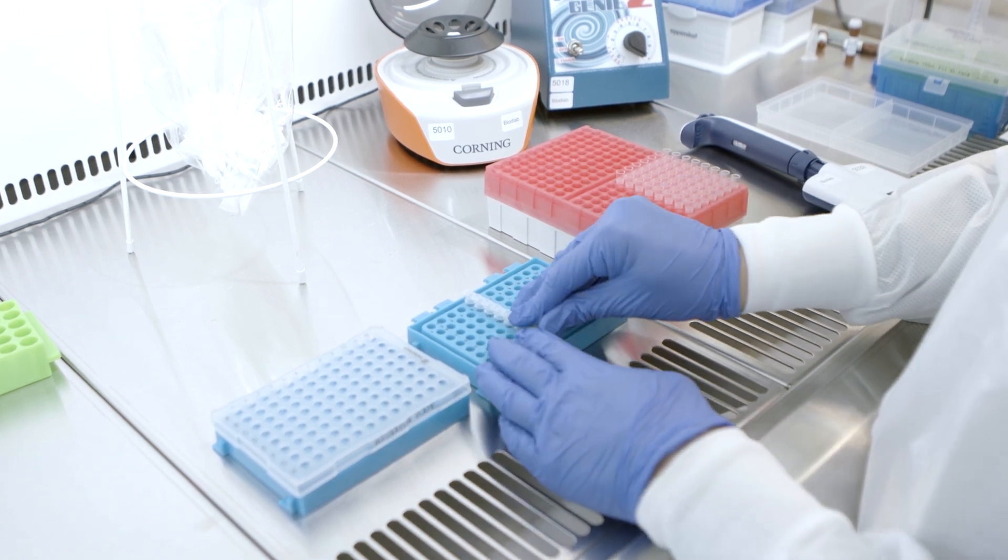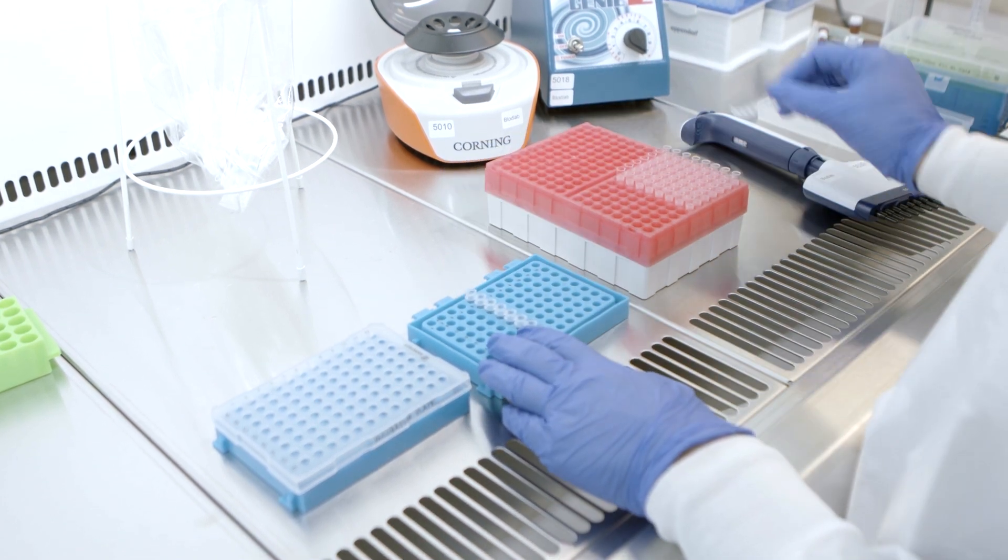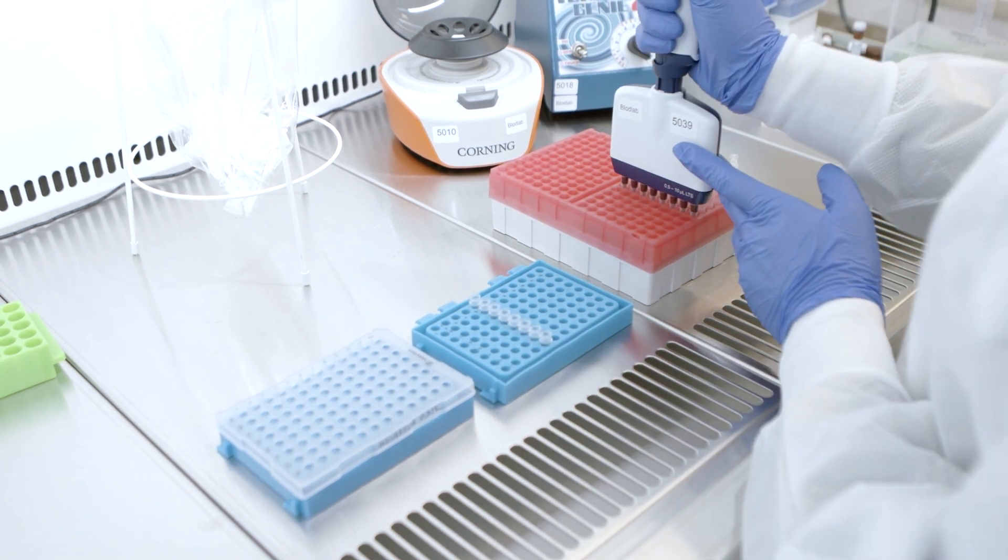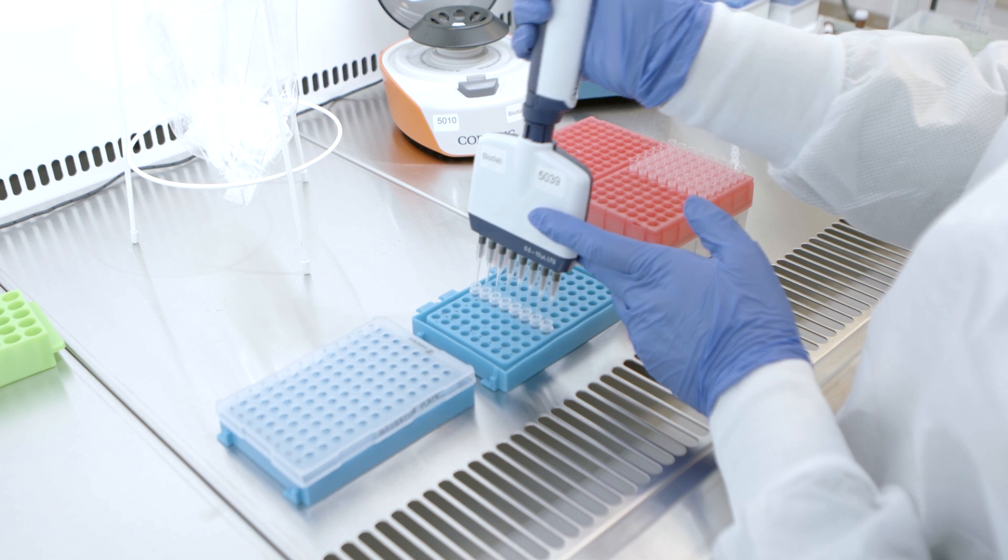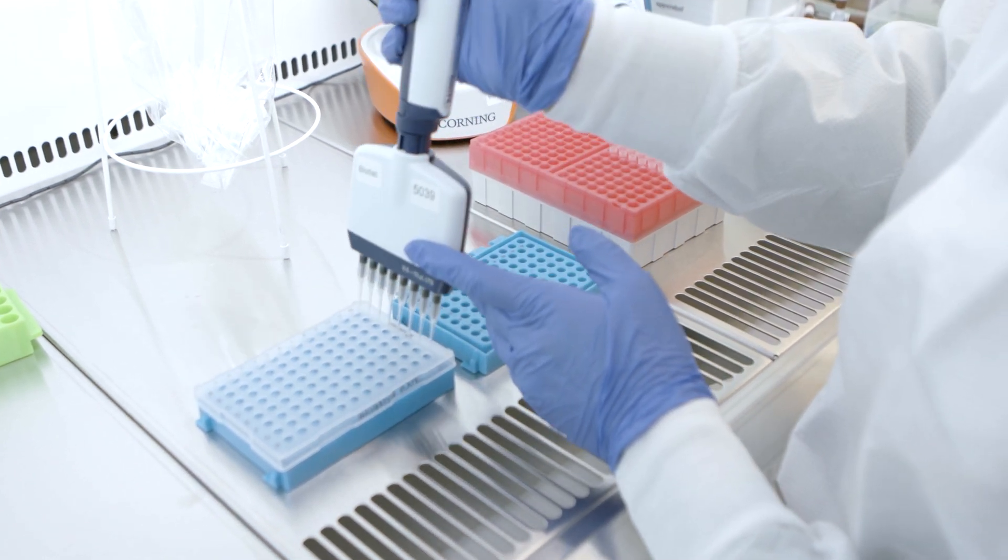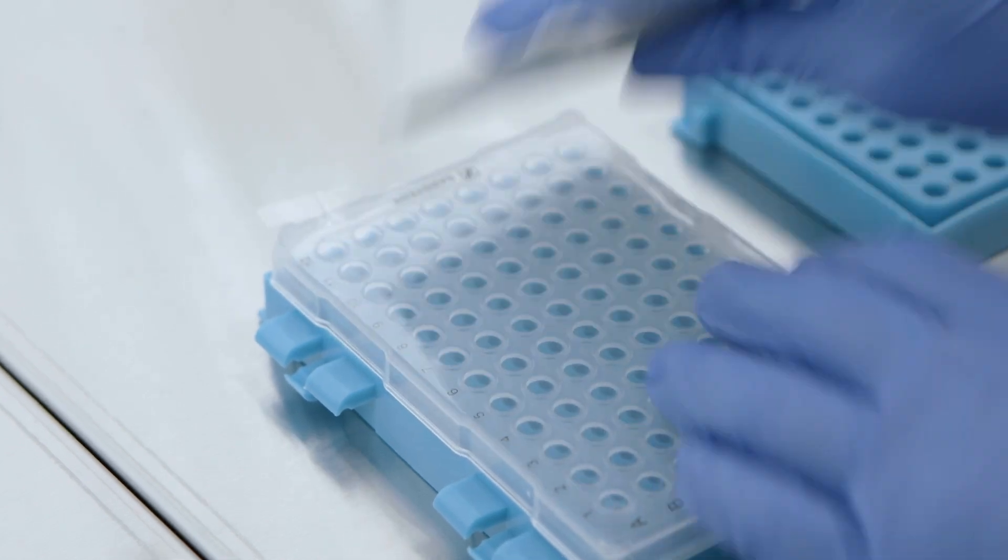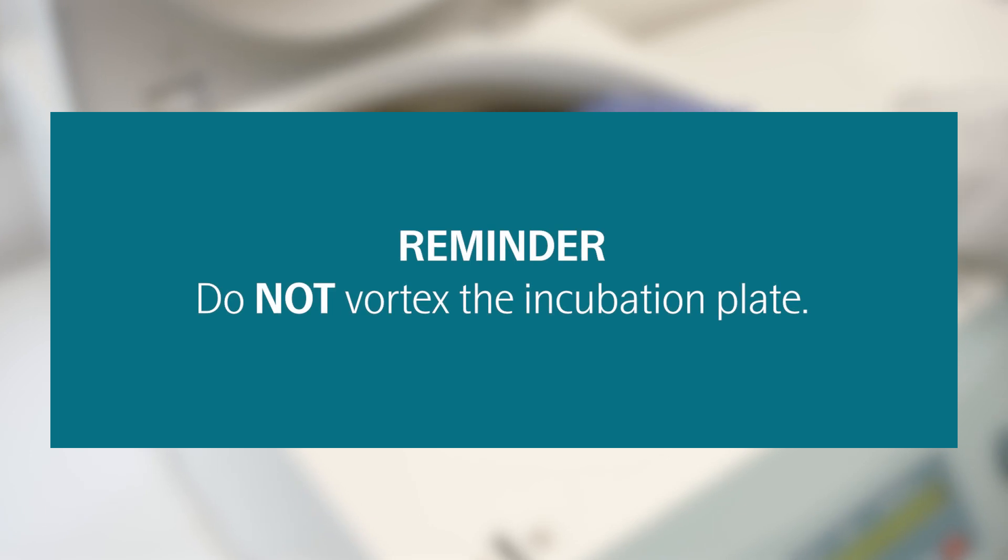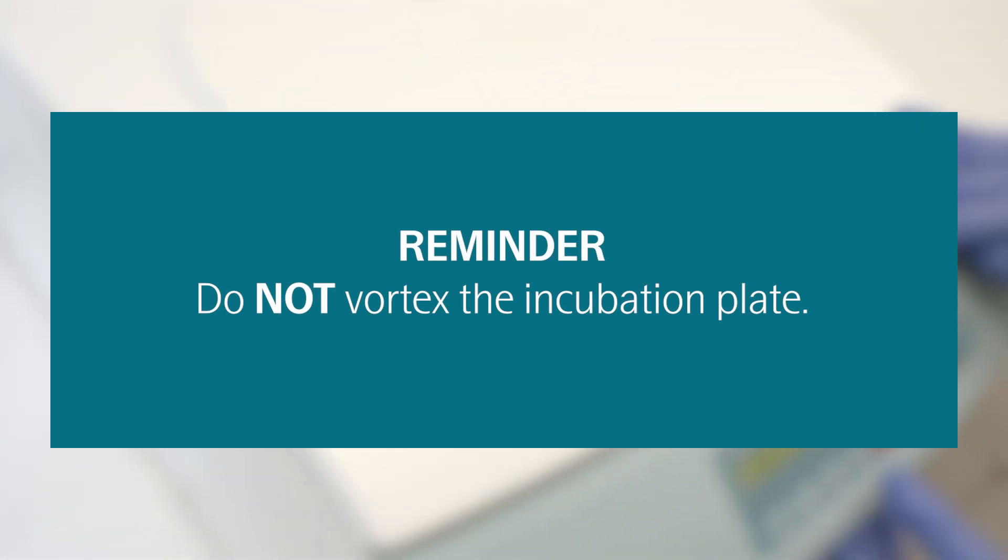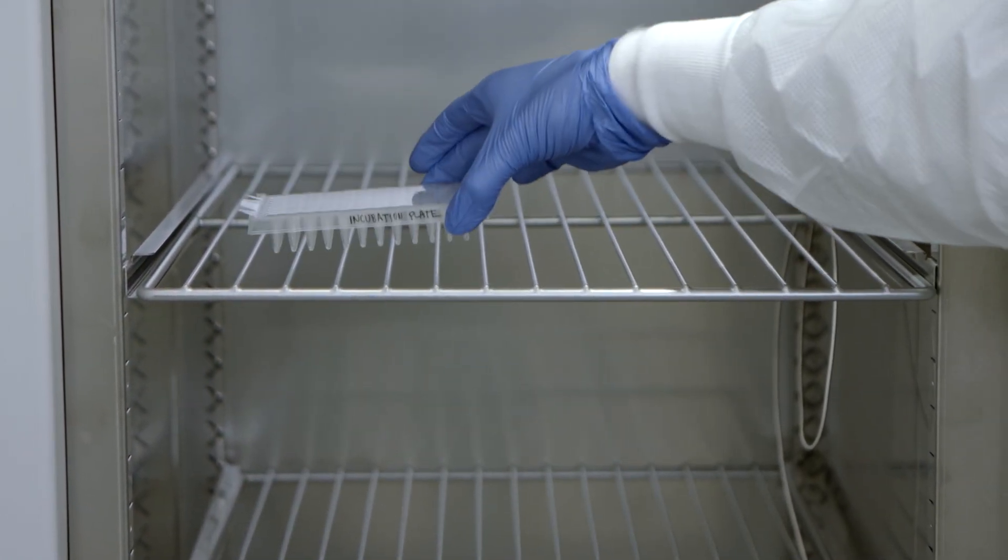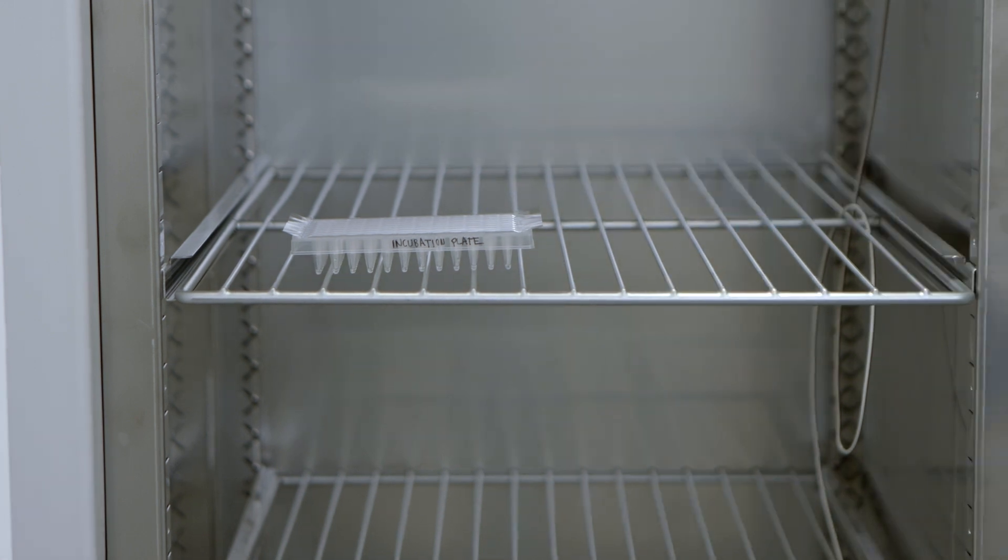Finally, use the multichannel pipette to transfer 1 microliter of negative control and interplate control from the prepared PCR control strip into the wells of column 12 of the incubation plate using forward pipetting. Seal the plate thoroughly with an adhesive plastic film and spin down. Incubate at plus 4 degrees Celsius for 16 to 22 hours.